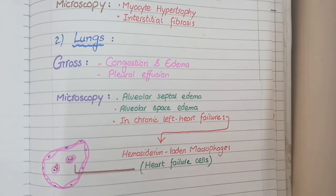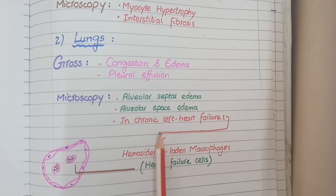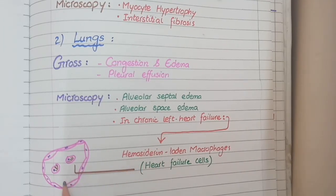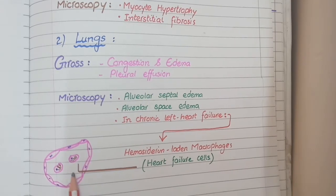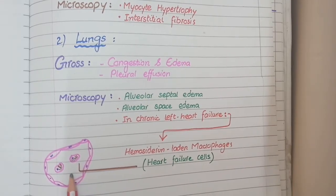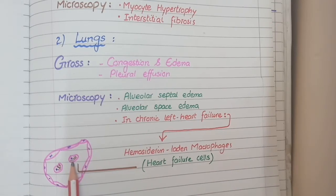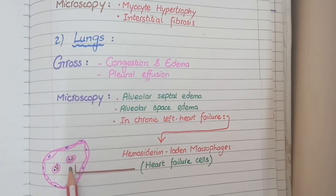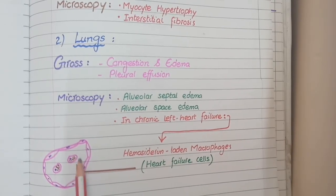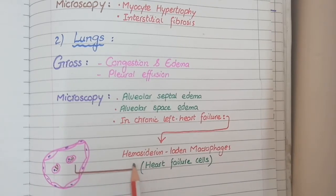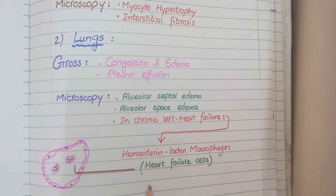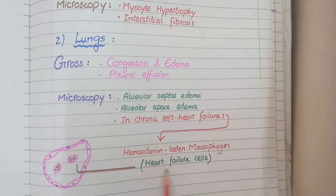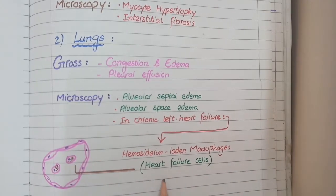This next point is very important. In left-sided heart failure, when pulmonary capillaries get congested, some red blood cells leak from the pulmonary capillaries into the alveolar spaces. Here, these red blood cells are ingested by macrophages, which convert the hemoglobin into hemosiderin. This hemosiderin gets deposited in the macrophages in the form of brown pigments. On microscopic view, you see brown-pigmented macrophages, which are known as heart failure cells.